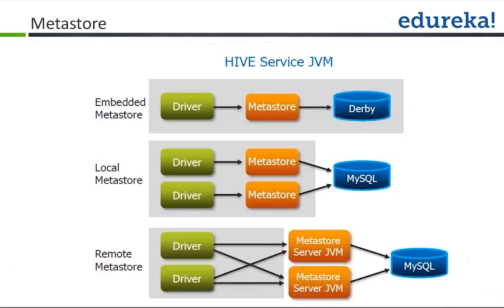For the metastore, you have the option of using the embedded metastore — when you install Hive, it comes with a Derby metastore, which is what we have in our virtual machine. With Derby, you can store all your database and table definitions, but you can have only one command-line interface open at a time. If you need more than one connection, you have to go with MySQL, which you can store locally on the machine where Hive is running or on a remote machine.